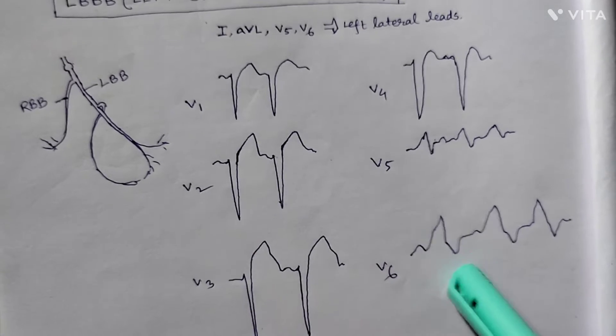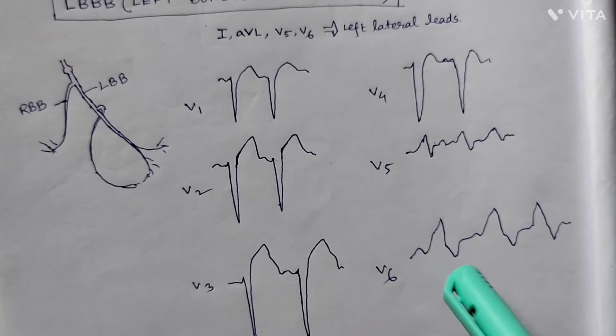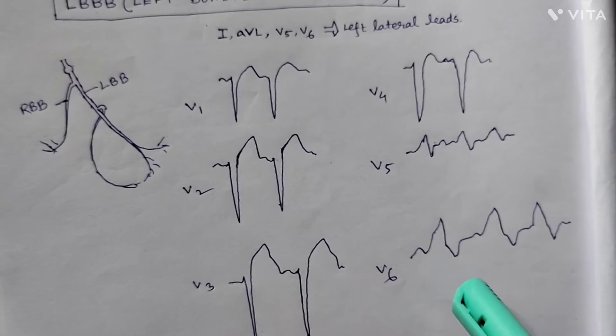This is a characteristic finding of LBBB on the left lateral leads: wide QRS and ST depression along with T inversion.